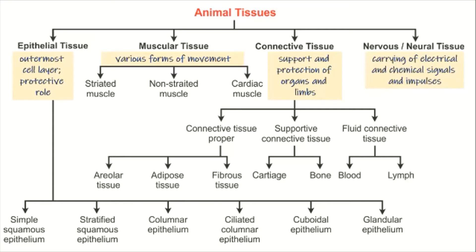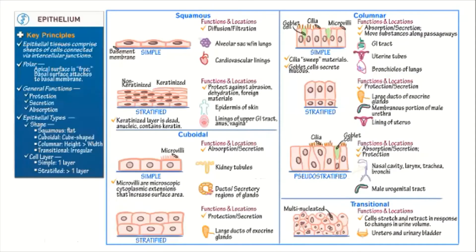Now let's discuss the epithelial tissues. These are composed of sheets of cells connected by intracellular junctions. As you can see in the image, you would see different shapes of epithelial cells. The general functions are protection, secretion, and absorption.